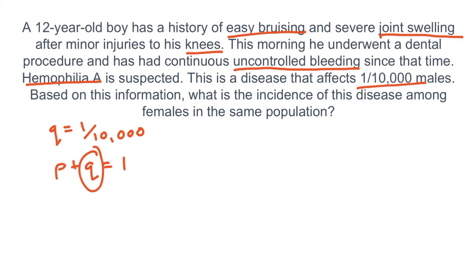In the equation P plus Q equals 1, Q represents the frequency of males with the disease. Because the allele frequency is the same in males and females, Q is also 1 over 10,000 for females. However, because females have two X chromosomes, they must have two diseased alleles to be affected, meaning the frequency of affected females equals Q squared. So Q squared equals 1 in 100 million, which is the incidence of this disease among females in this population.